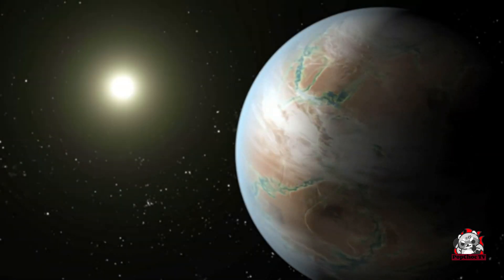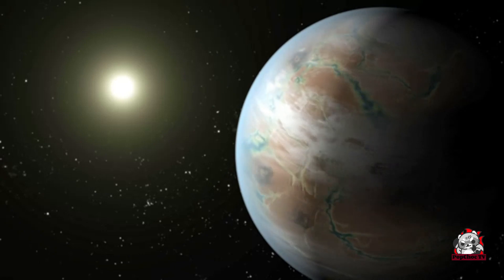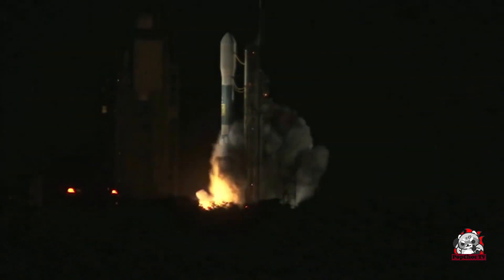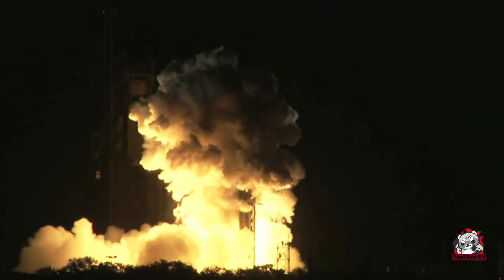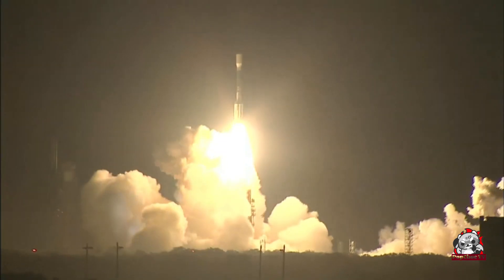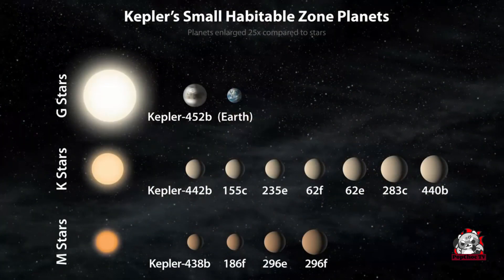Coming in at number 8, we have the discovery of the first known exoplanets. In 1992, astronomers detected the first planets orbiting a star outside our solar system, known as exoplanets. Since then, thousands more have been discovered, some with the potential to support life. This has revolutionized our understanding of planetary formation and expanded our search for alien life beyond our own cosmic neighborhood.